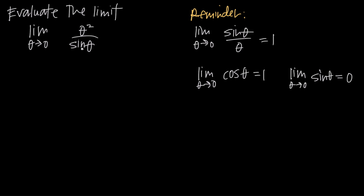When you have trigonometric limits — meaning you have a function that involves a trigonometric function, like in this case sine of theta — and you're trying to take the limit of that function, our goal is always to reduce the function so that it's in one of these three forms: either sine theta divided by theta, cosine of theta, or sine of theta. Because when we take the limit as theta approaches 0 of any of those values, we already know the limit. For example, the limit as theta approaches 0 of sine theta over theta is equal to 1. So if we can change the format of this function to match one of these three values, it'll be easier to evaluate the limit.